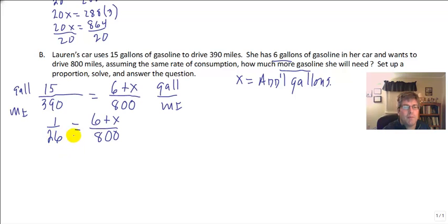So I do like to reduce to make my numbers a little bit smaller. I can cross multiply 1 times 800 equals 26 times 6 plus x. So 800 equals 26 times 6.